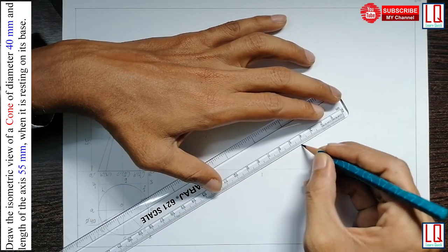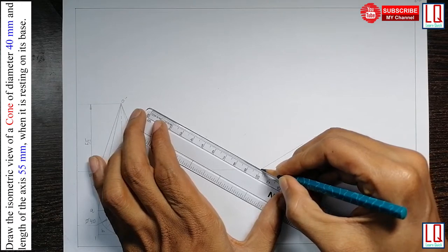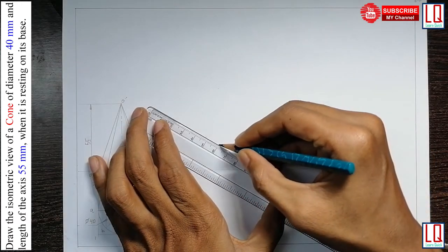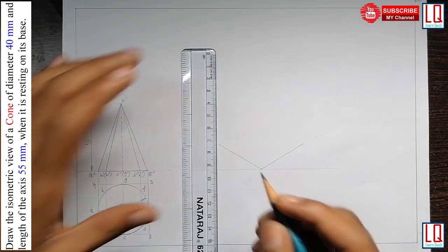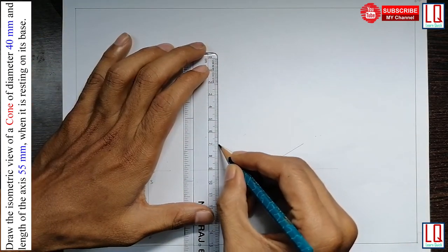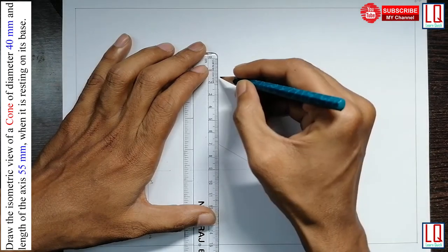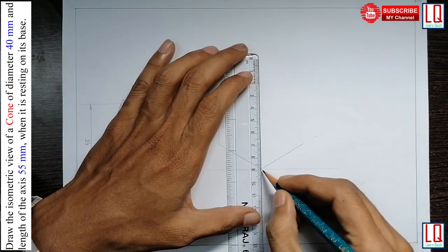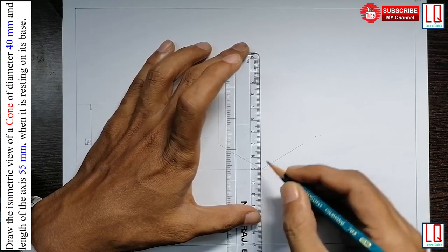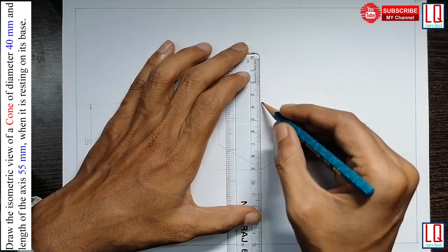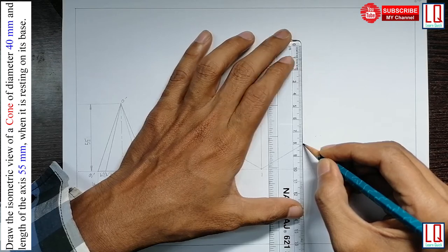So, draw 40 mm and in all the corners, draw the height of the given solid 55 mm. Similarly here, 55 mm and again 55 mm.